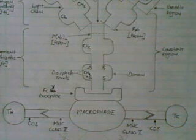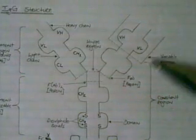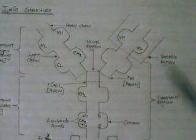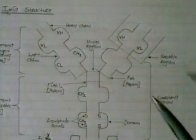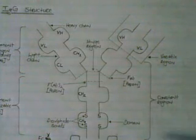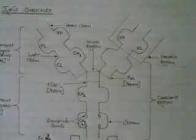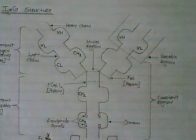Just to recap what we just explained: this is the variable region, this is the constant region, these are the two heavy chains and two light chains, and the hinge region. This is where pepsin acts, and this is where papain acts. This portion is called FAB, and this portion is called the FC region.